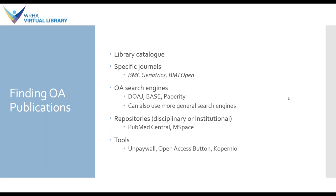Next we have OA repositories. A repository is essentially a website or archive where someone has put a copy of their work — either the author themselves or the journal on their behalf. Repositories can be disciplinary, based on the subject area of the work — for example PubMed Central is a biomedicine-based repository — or they can be institutional, hosted by a particular university or organization. MSpace is the institutional repository of the University of Manitoba. Finally, there are various tools such as Unpaywall, the Open Access Button, and Kopernio — all browser extensions that can help you find open access versions of a particular source.